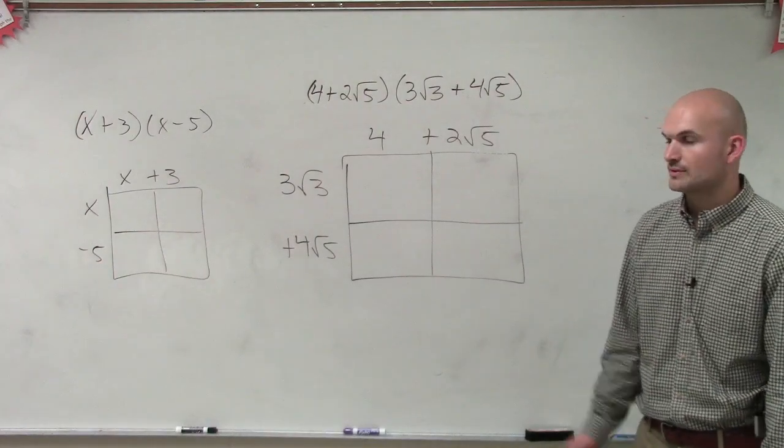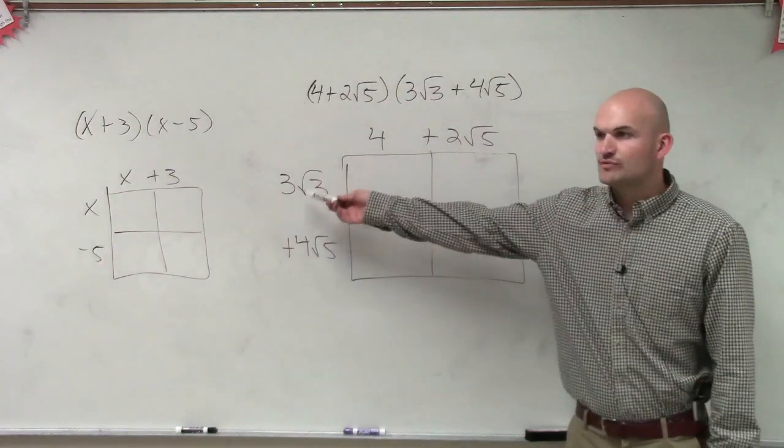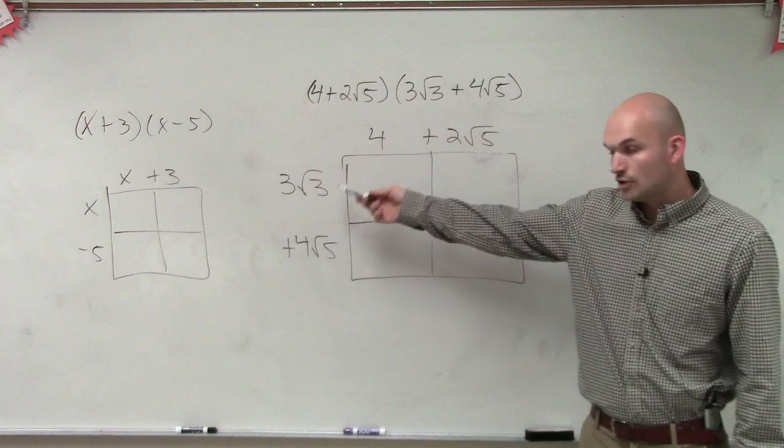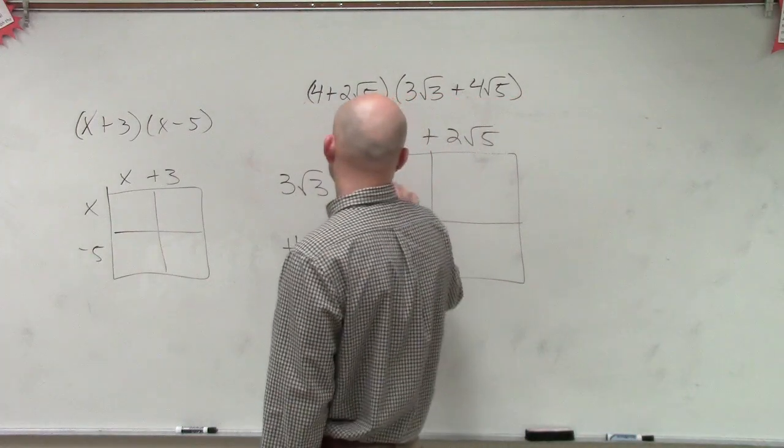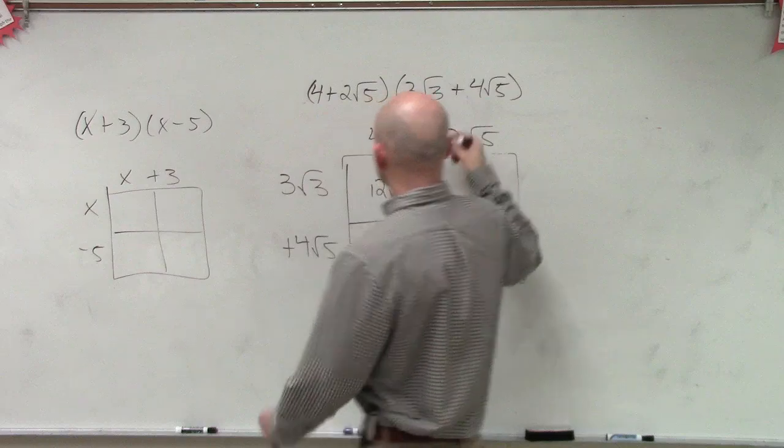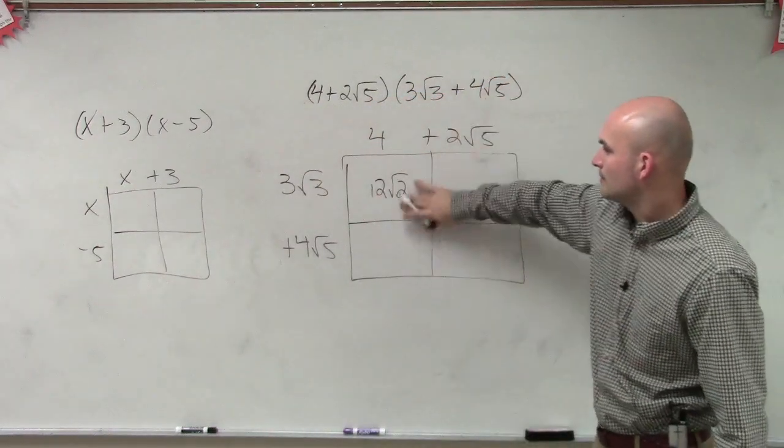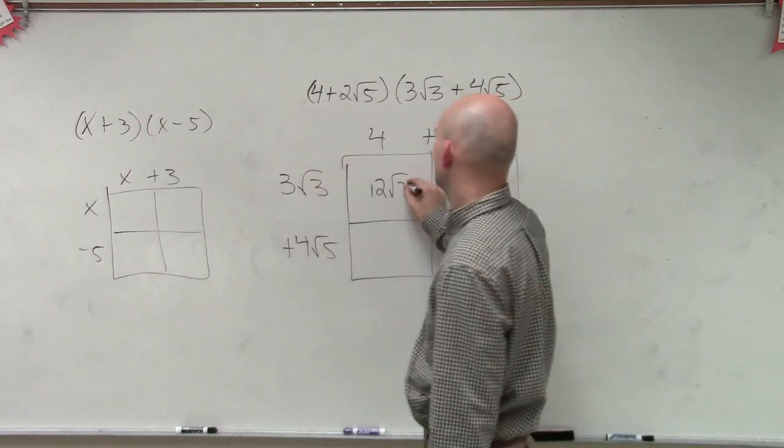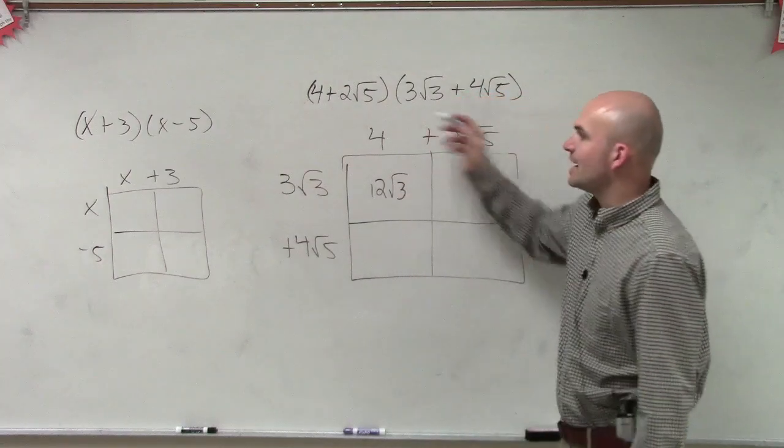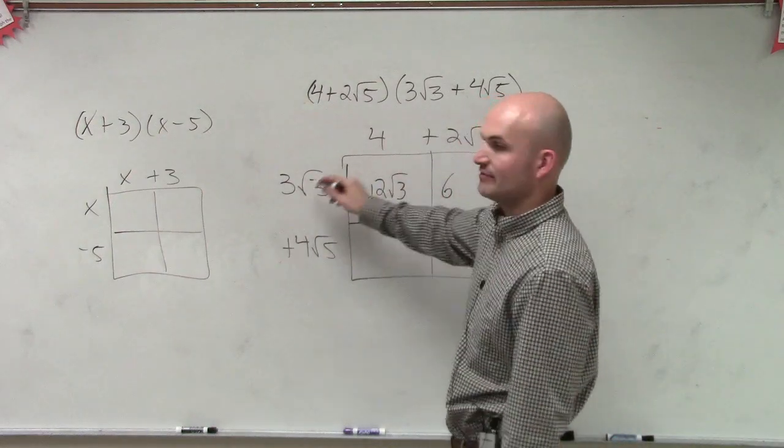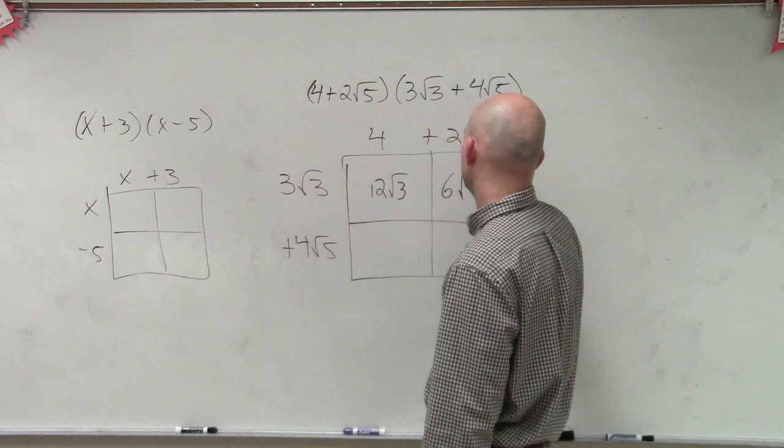So 4 times 3√3 is just going to be 12√3. If I do 2√5 times 3√3, 2 times 3 is 6, and √5 times √3 is √15.